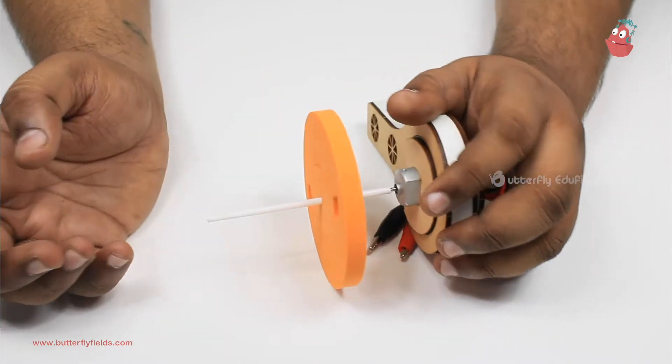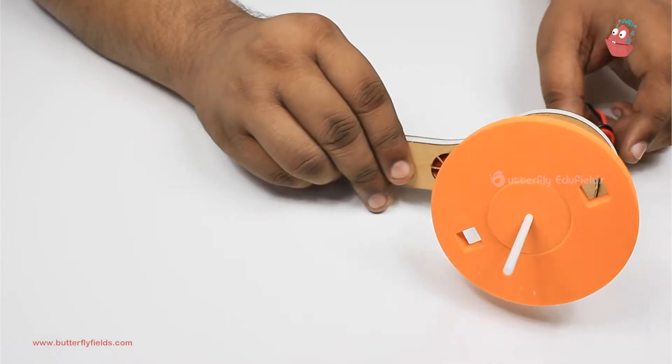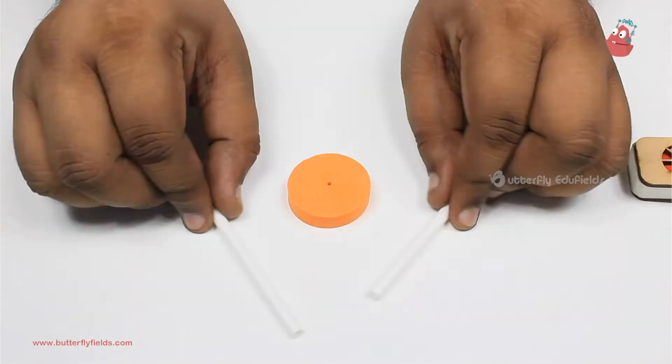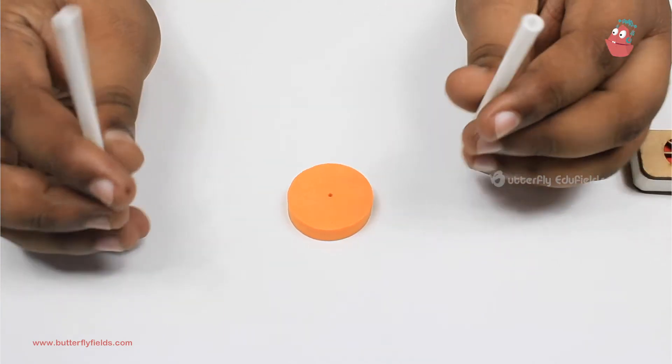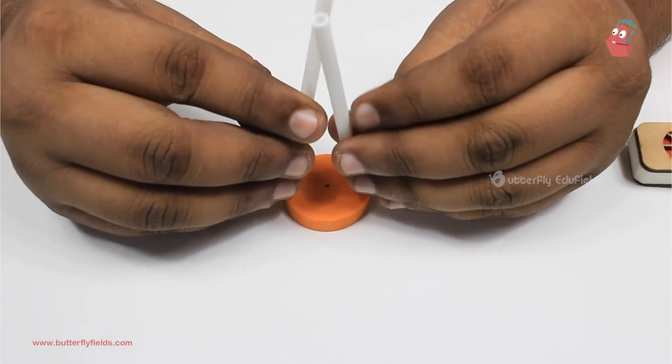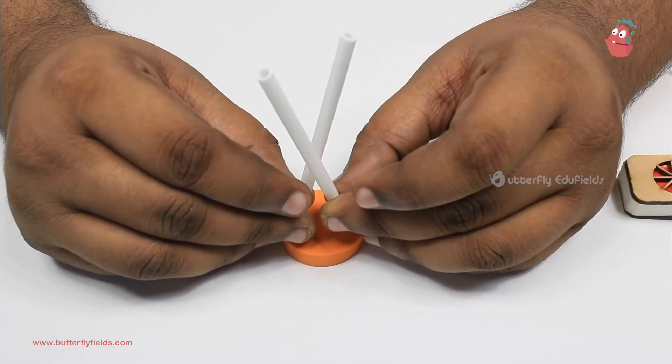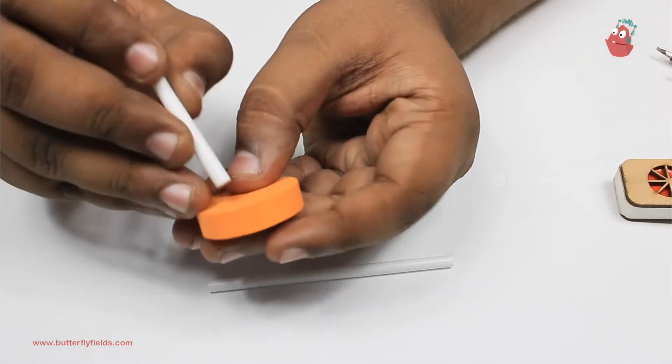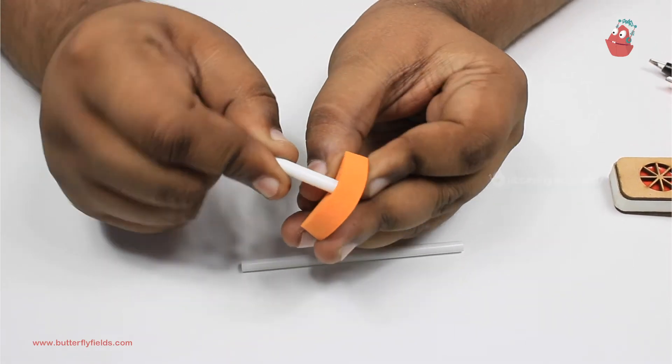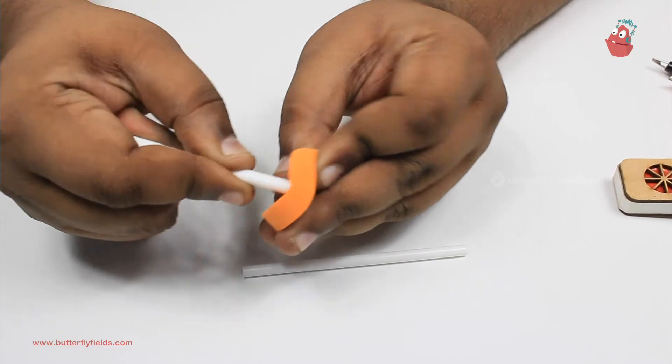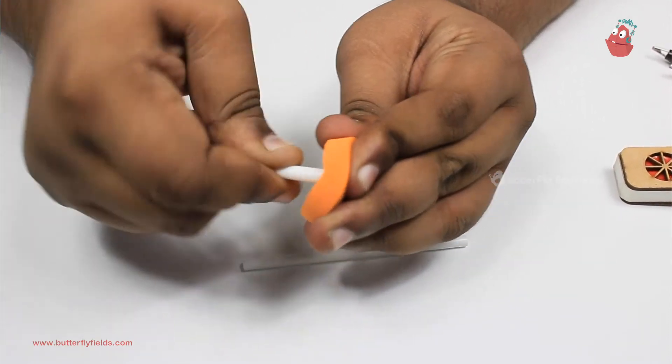Now the next step: we will fix these two straws at either side of the hole which is at the center, and we'll need to fix it such that they form an X shape like this. Let's fix the first straw first. I am going to fix it at a certain angle. You can fix it straight also and then you can bend it.